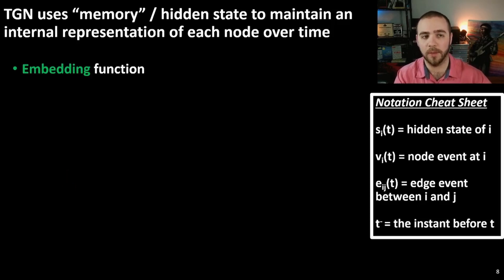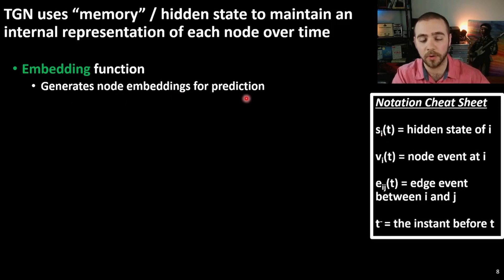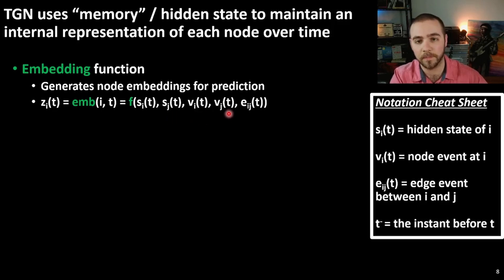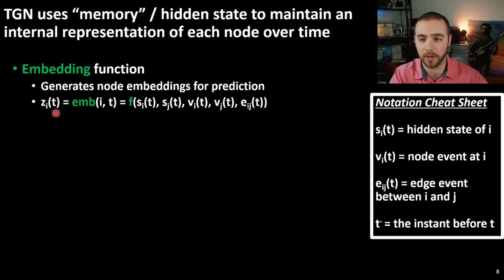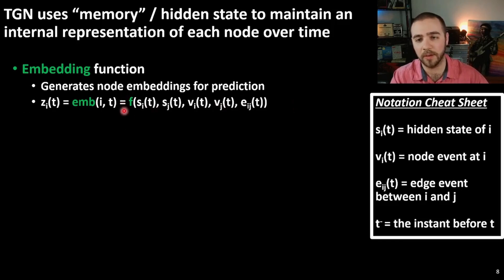The first function we'll cover is the embedding function, marked in green. Based on your current set of hidden states, you generate node embeddings for some type of prediction problem. In the paper this is notated as Z_i(t) or EMB(i, t). You take in the hidden states for associated nodes, look at any current events they're associated with, and look at any interactions between these nodes. This generates an embedding for a single node Z_i, which you can use for clustering, prediction, regression, or any machine learning problem you can think of. The F function can be thought of as a feedforward neural network.